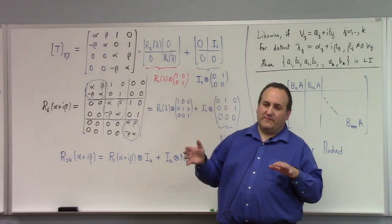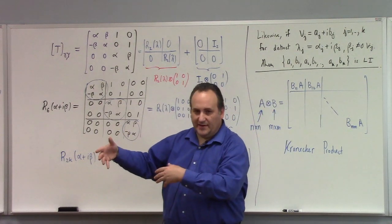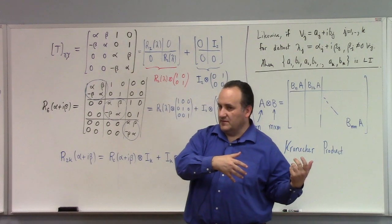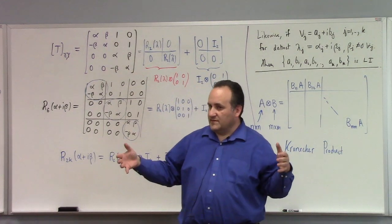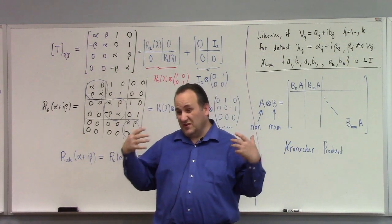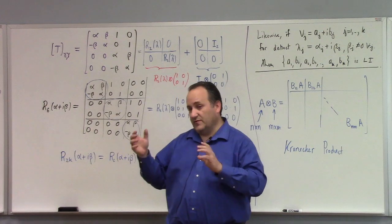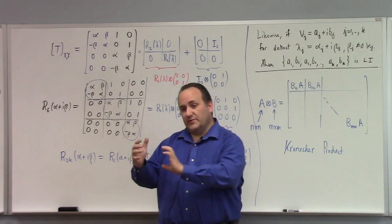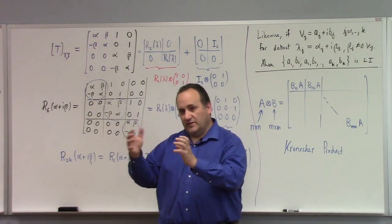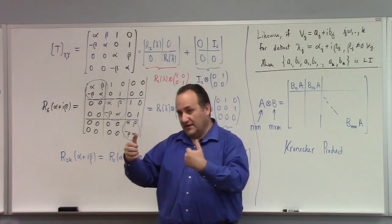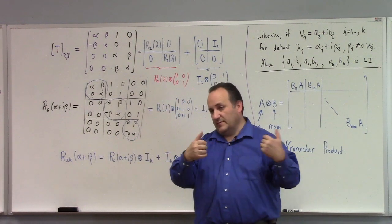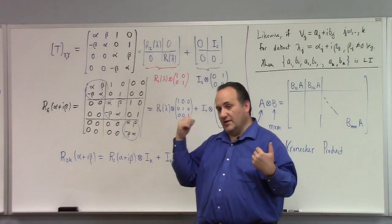Generally we'll have a mixture: some real eigenvectors with real eigenvalues, and some complex conjugate pairs. The union of those two things gives us a real Jordan basis, and the transformation's matrix with respect to a real Jordan basis is a direct sum of real Jordan blocks — the usual J-blocks for real eigenvalues, plus the R_{2k} real Jordan blocks for the complex eigenvalue pairs.